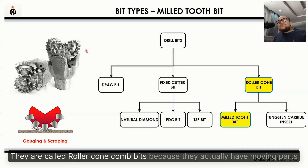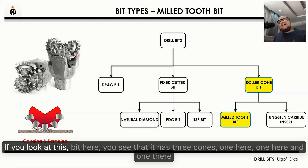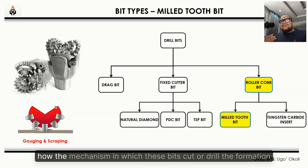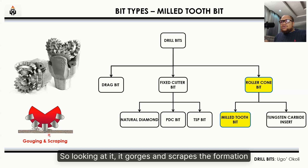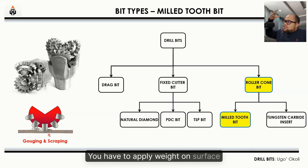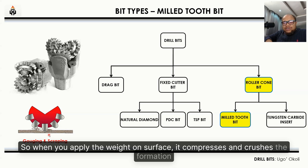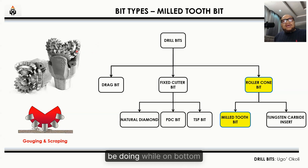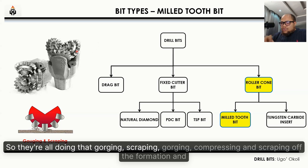Roller cone bits are called so because they have moving parts — if you look at this bit here, you see it has three cones. The diagram at the bottom explains the cutting mechanism: it gorges and scrapes the formation. When you apply weight on surface, it compresses and crushes the formation, and when it rotates it scrapes off the formation — deforms, gorges, crushes, then scrapes off the formation.